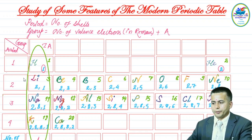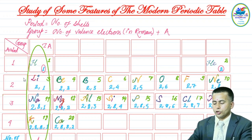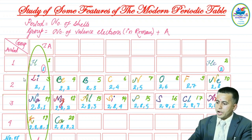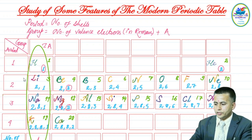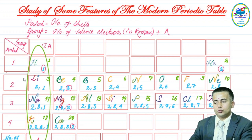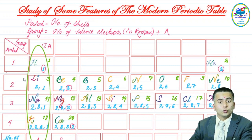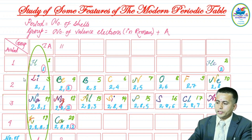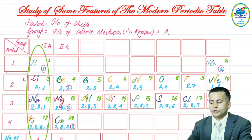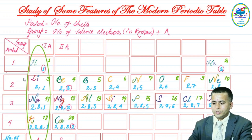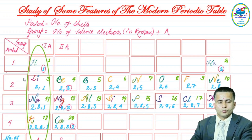For the second vertical column, all atoms — beryllium, magnesium, and calcium — have two electrons in their valence shell. Two in Roman numerals is II, so adding capital A gives Group IIA. That is how beryllium, magnesium, and calcium are assigned to Group IIA in this portion of the periodic table.